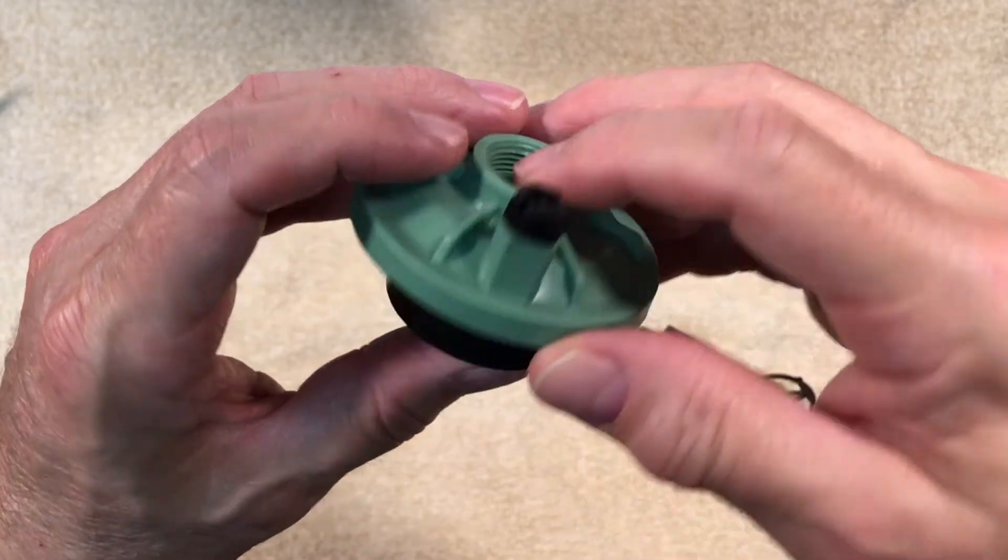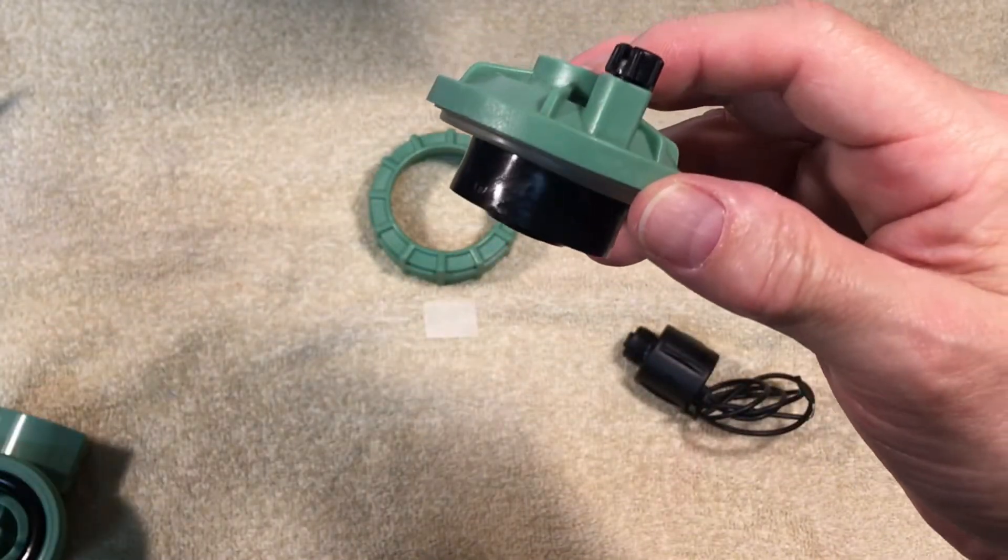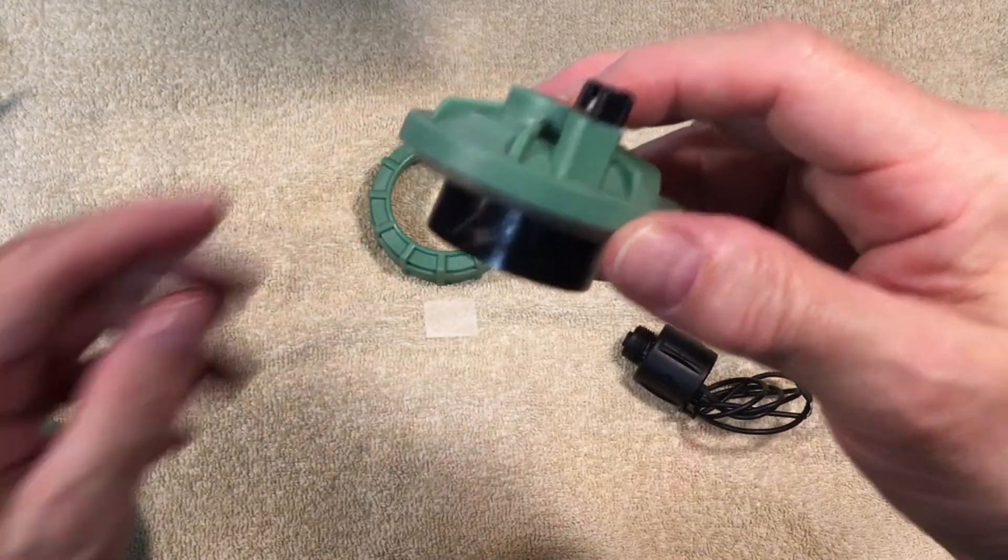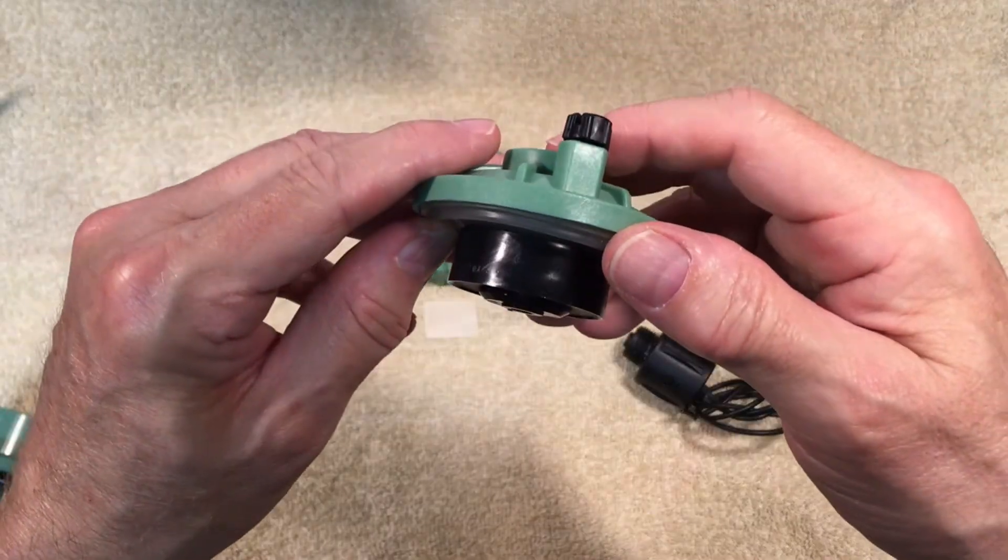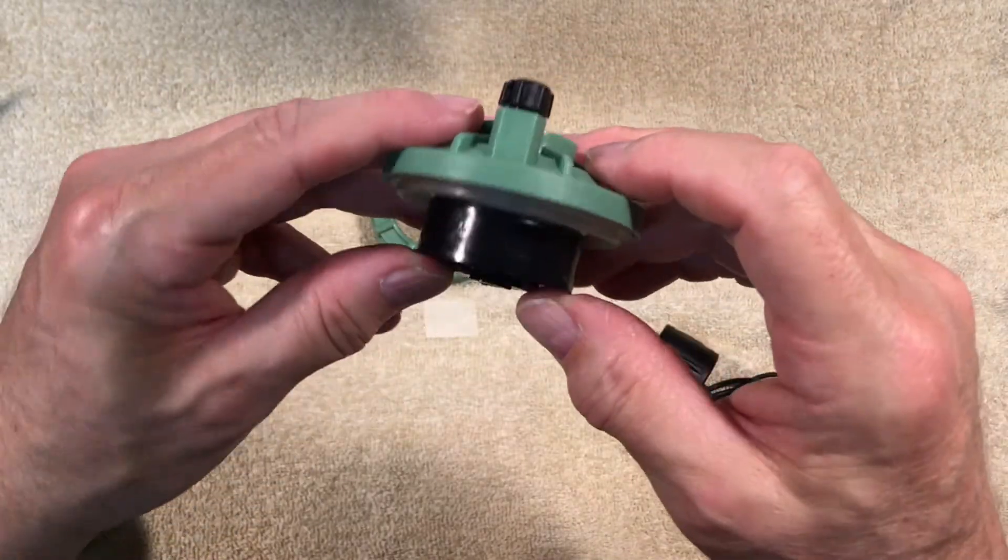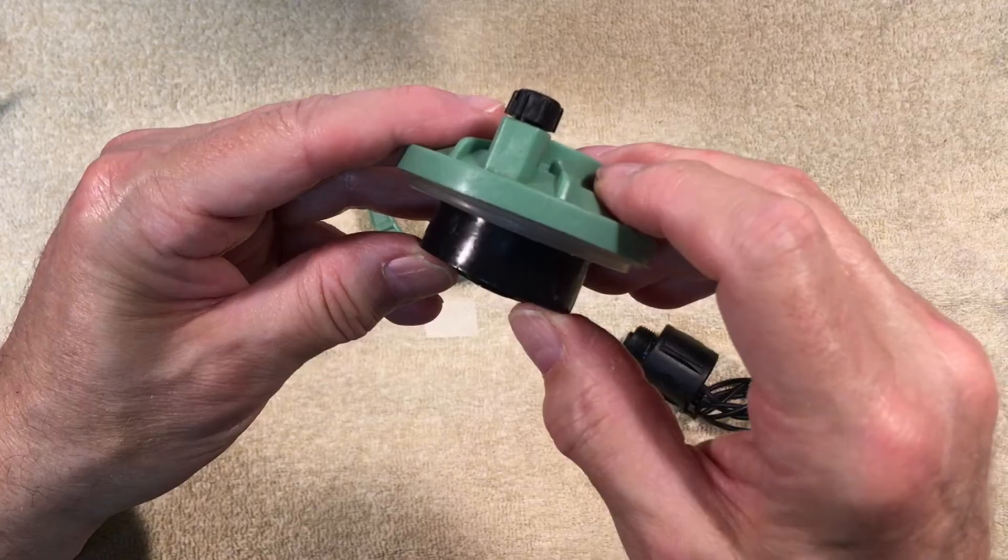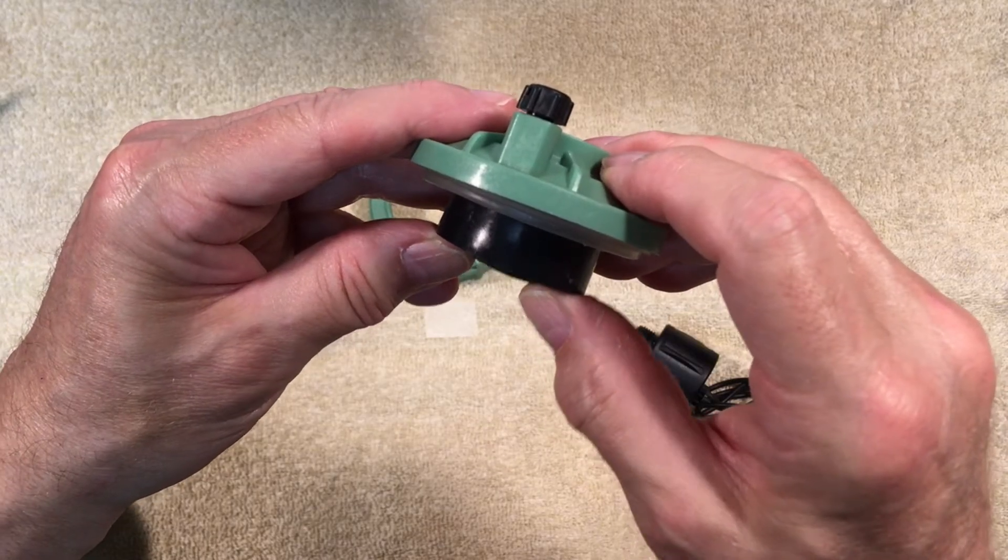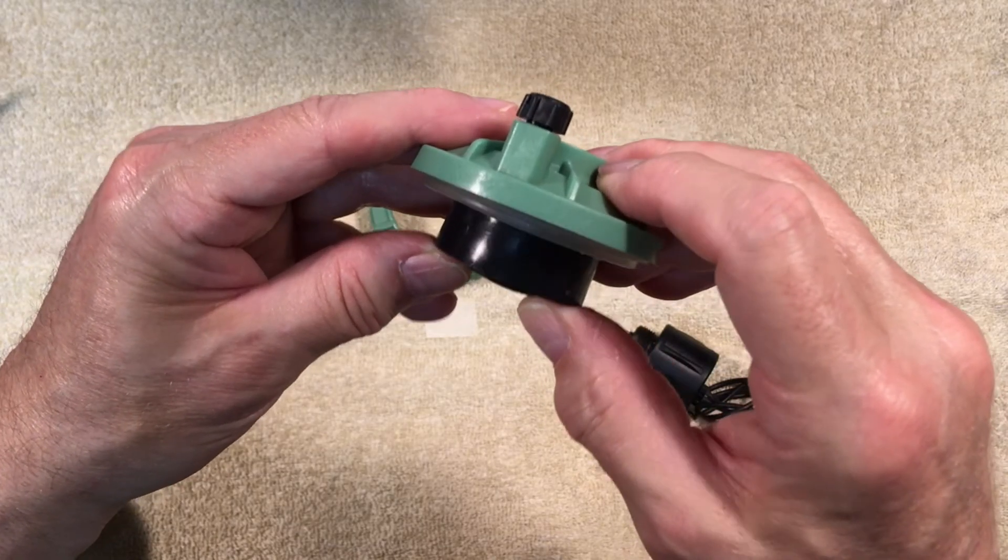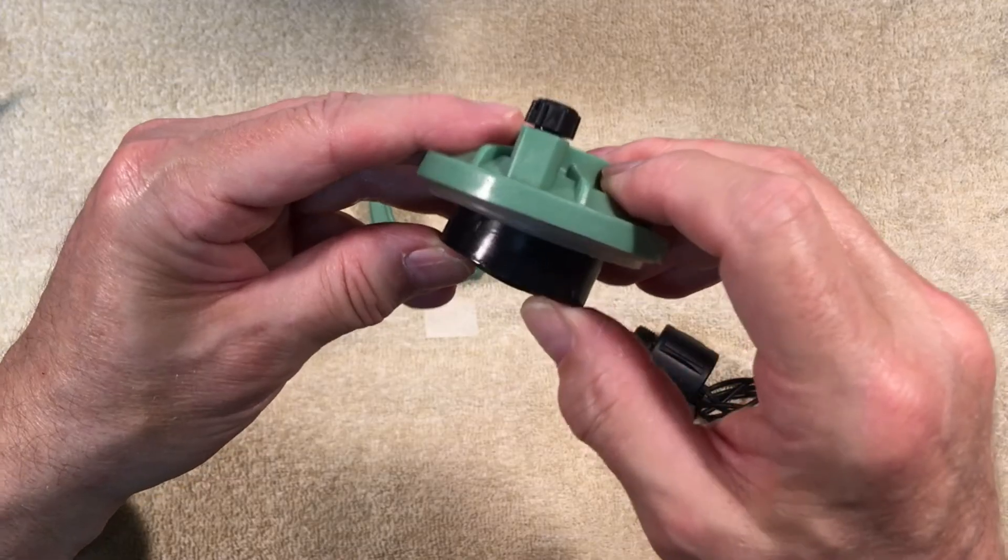Now there is nothing holding the water pressure from the bottom of the valve back. The pressure easily overcomes the spring, which is not strong enough to hold back full water pressure. This allows the middle of the diaphragm to flex up about a quarter of an inch.